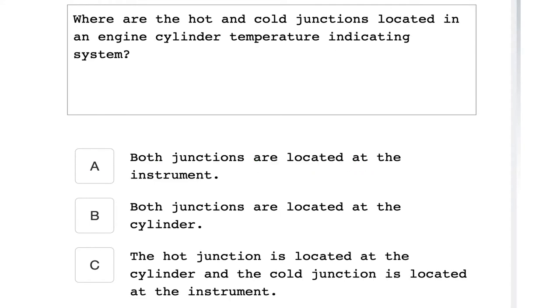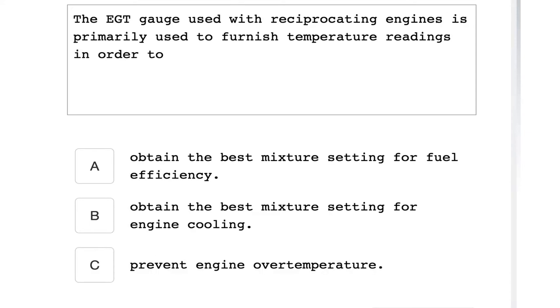Where are the hot and cold junctions located in an engine cylinder temperature indication system? The hot junction is located at the cylinder and the cold junction is located at the instrument. The EGT gauge used with reciprocating engines is primarily used to furnish temperature readings in order to obtain the best mixture setting for fuel efficiency.